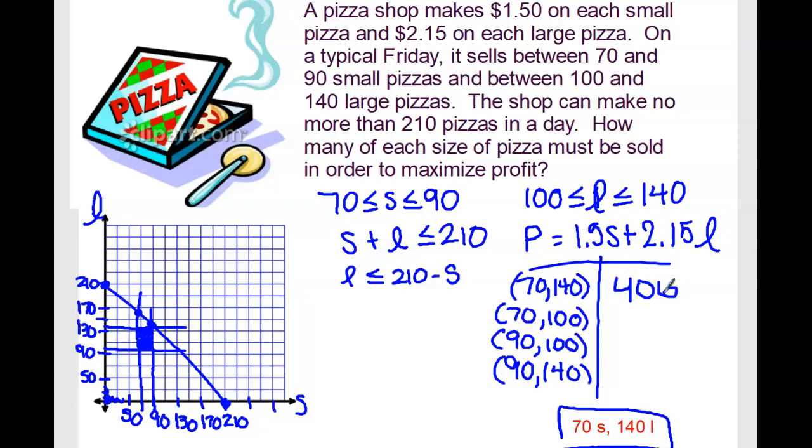Similar but different. You take the 1.5 times 70, but now 2.15 times 100. So we know we're going to make less money selling fewer large and the same number of small. Now we sell more small, but the same number of large, and we get 350.